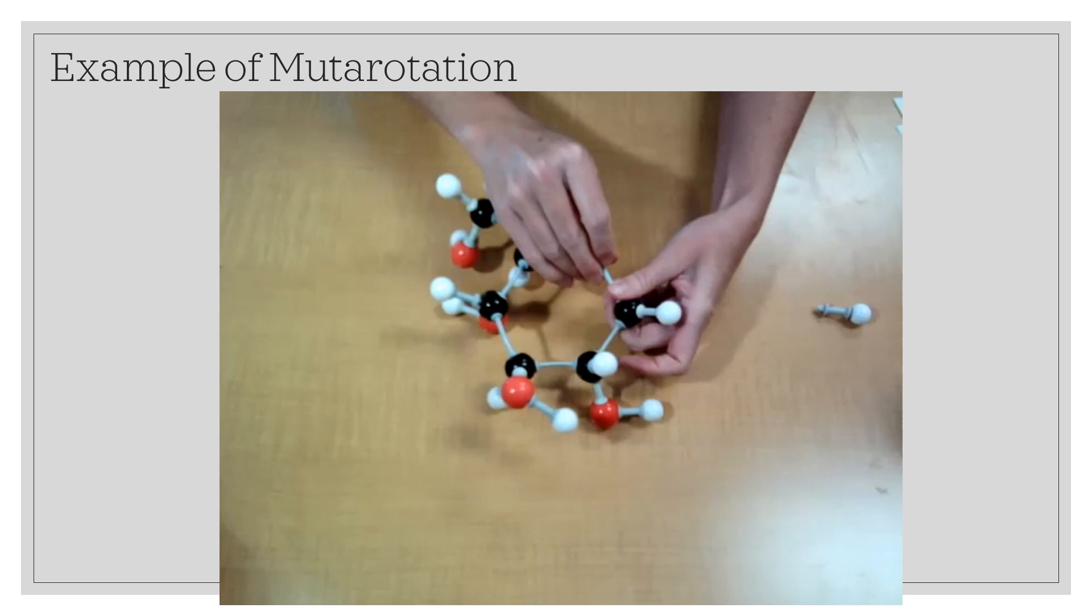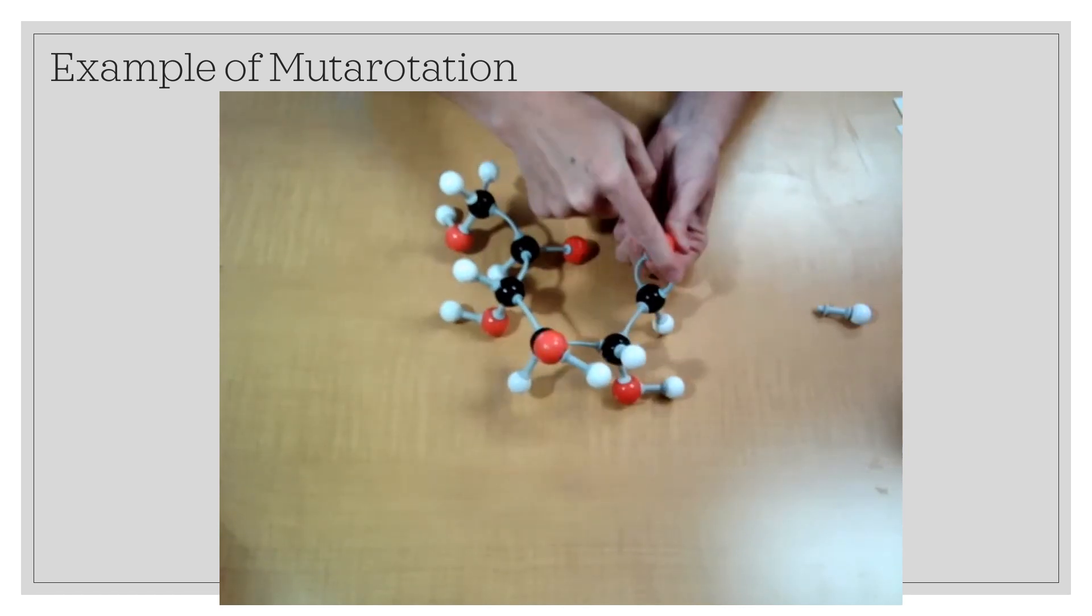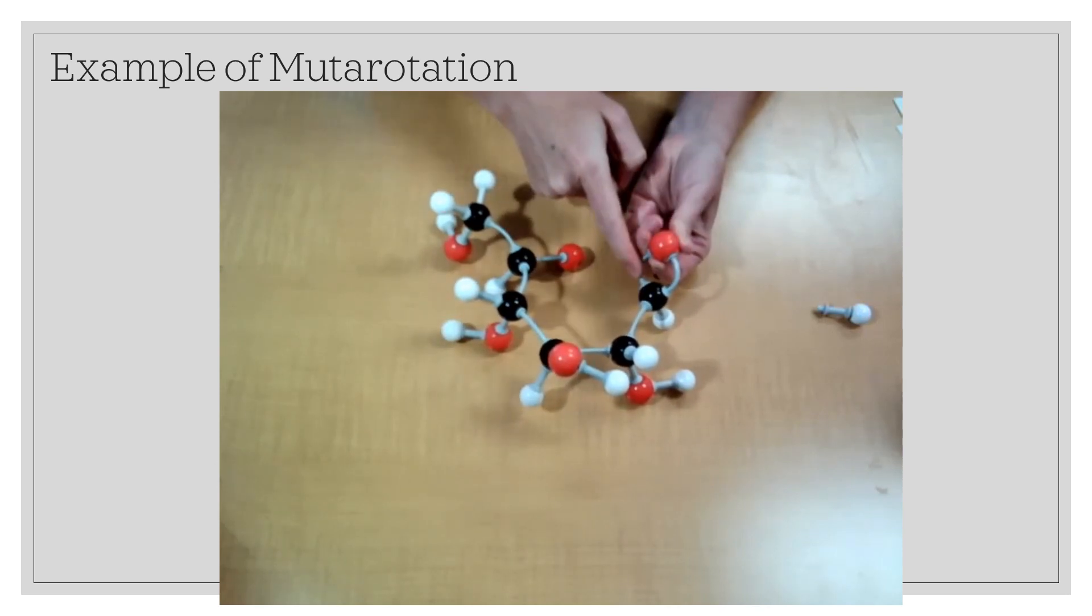So the difference between your alpha and your beta is simply which one of these carbonyl bonds did you break? That's mutarotation.